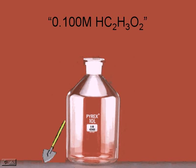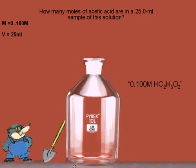An aqueous solution in the lab is labeled 0.100 molar HC2H3O2. How many moles of acetic acid are in a 25.0 milliliter sample of this solution?